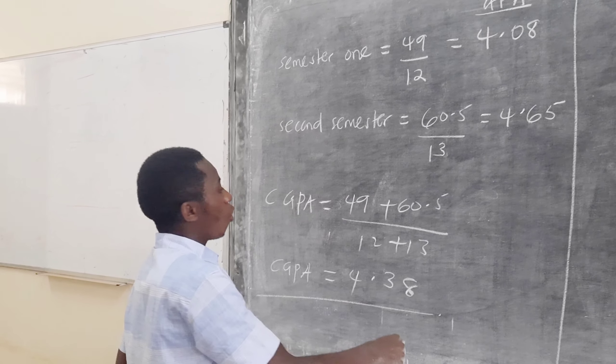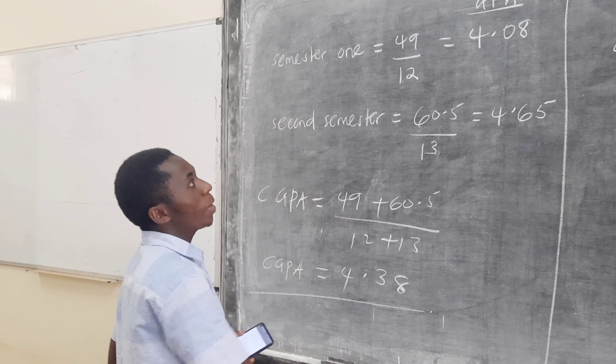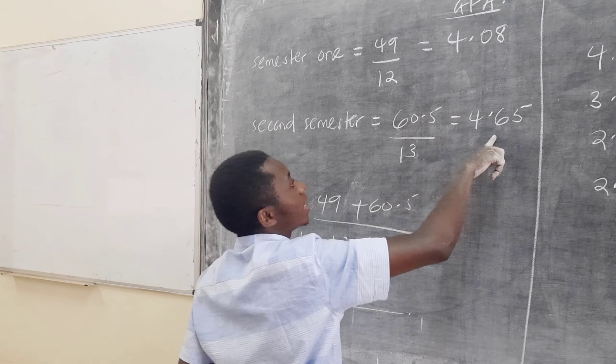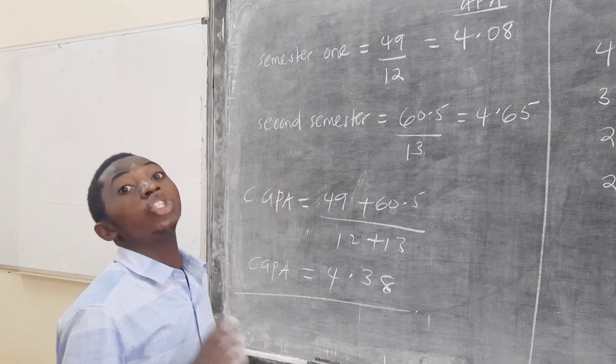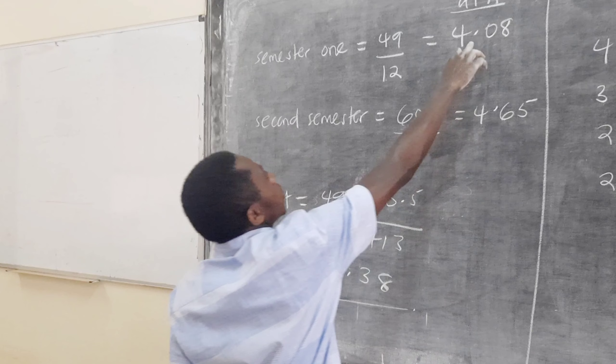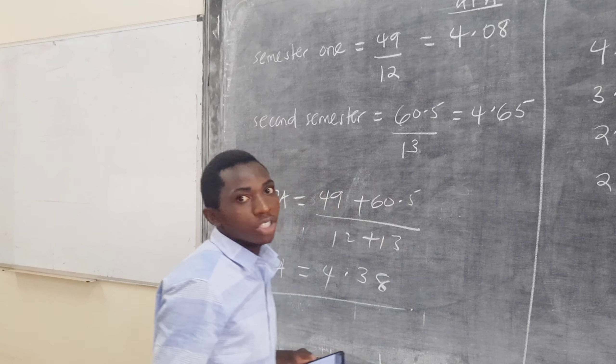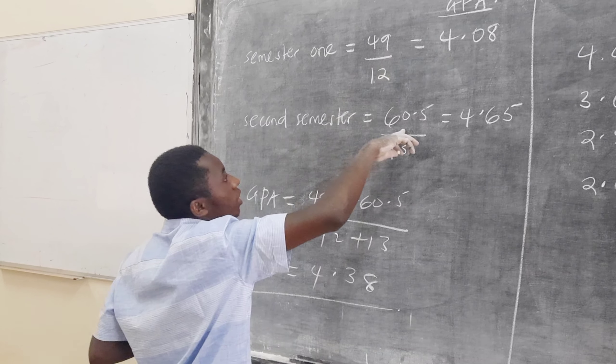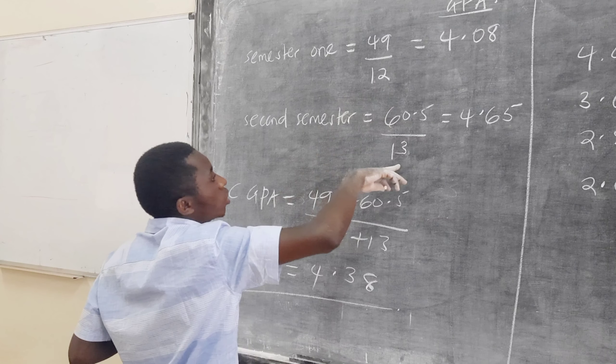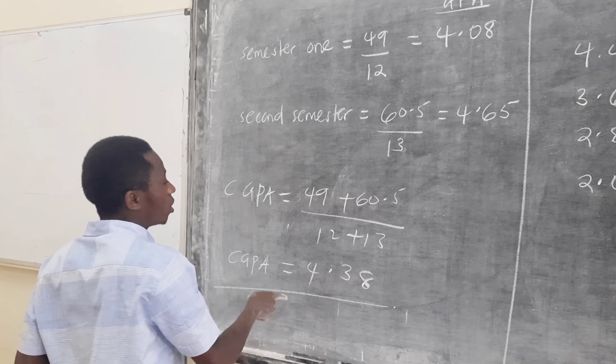I need to highlight here. When you're getting the CGPA, some people will say this plus this divided by 2. Here, we're not getting average. We are dealing with the cumulative assessment. Once you say this plus this divided by 2, you'll get a wrong CGPA. That's why I come back to my former calculations. I combine this with this, I divide by the total CUs.